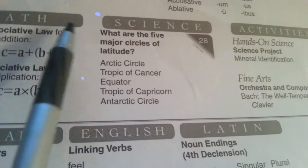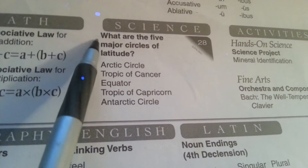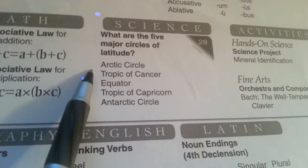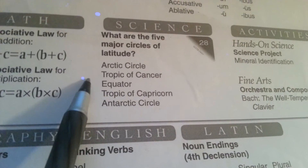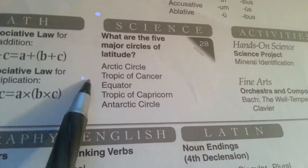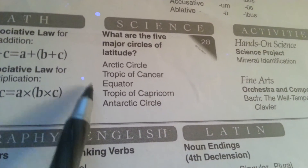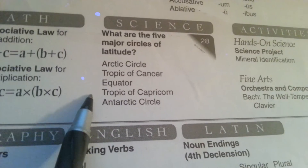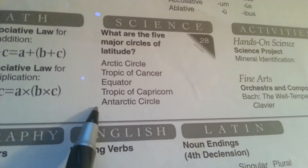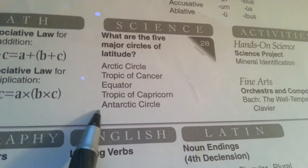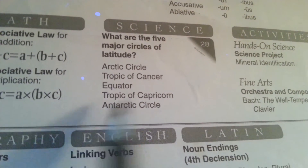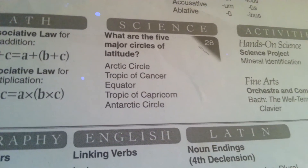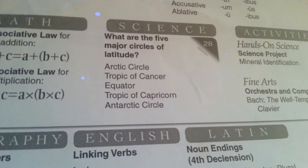What are the five major circles of latitude? Arctic Circle, Tropic of Cancer, Equator, Tropic of Capricorn, Antarctic Circle — five circles of latitude.